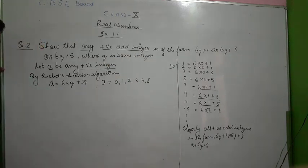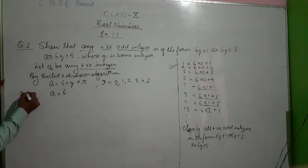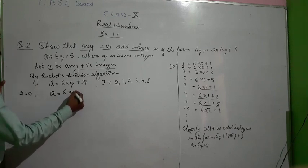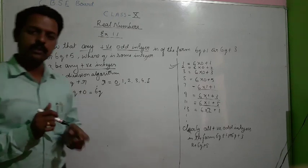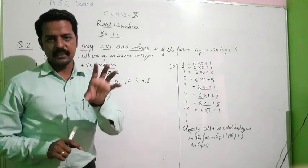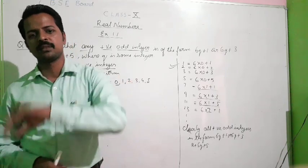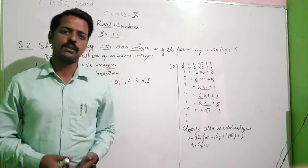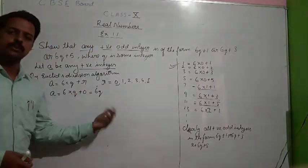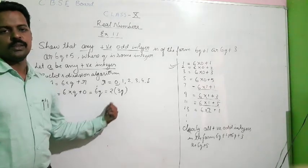These are the possible remainders. When r=0, we can write a = 6q. Can you tell me whether this number is even or odd? The numbers which can be represented in the form 2 into something are even numbers; numbers in the form 2m+1 are odd numbers. Can we represent 6q in the form of 2 into something? Yes — take 2 common and you get 2×3q. So 6q equals 2 into something, meaning it is an even number.